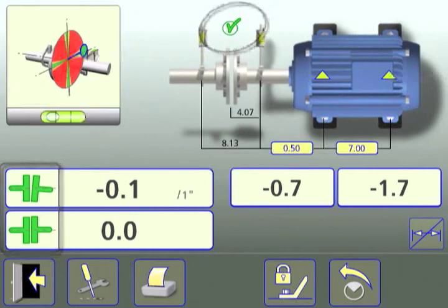Now the bolts can be re-tightened. Re-check the alignment by touching the re-measure icon and confirming the decision to re-measure.